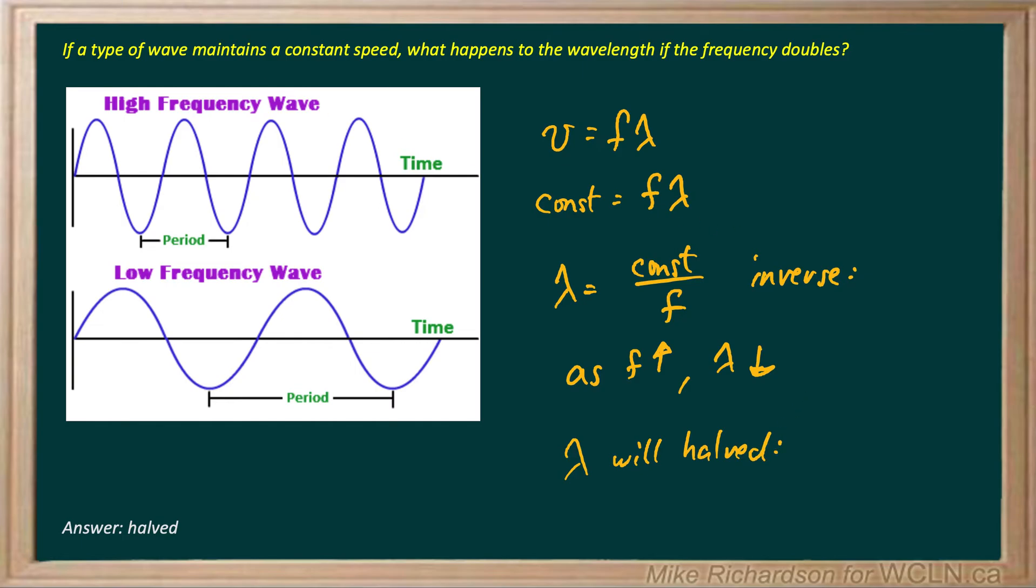The other way you could quickly do this is if we have a constant, that means let's call this bottom one here frequency 1, wavelength 1, and we'll call the top one frequency 2, wavelength 2.